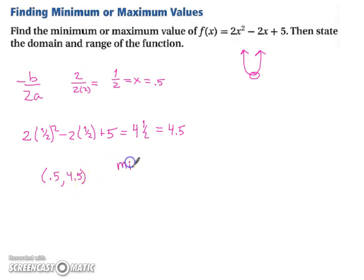So the minimum value is 4.5. But now, it wants the domain and range. So your domain is all your x values. And that was all real numbers. And your range was your y values. Well, if it has a minimum, that means all your y values are going to have to be larger. So for all y's, such that y is greater than or equal to 4.5.